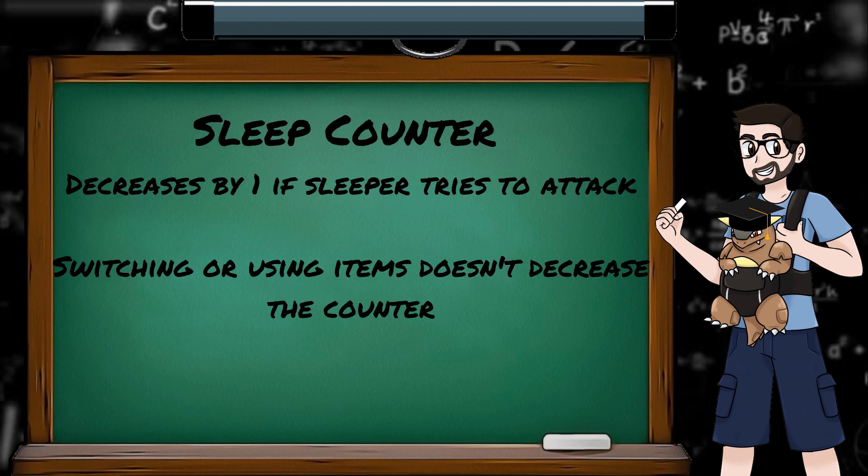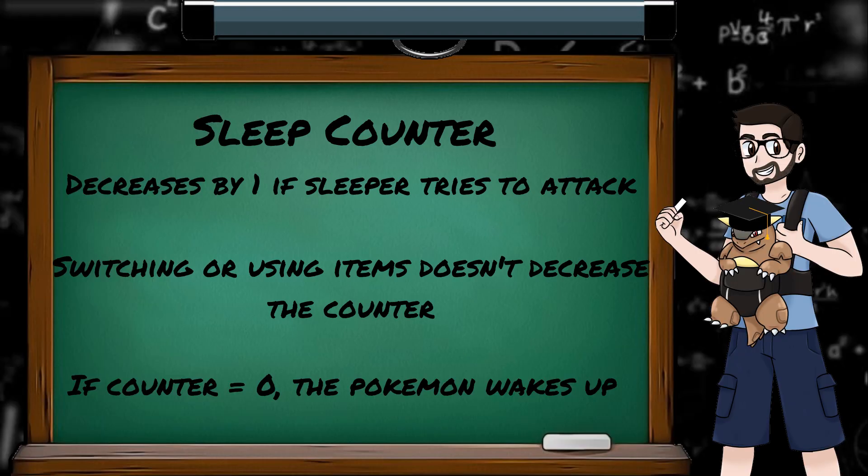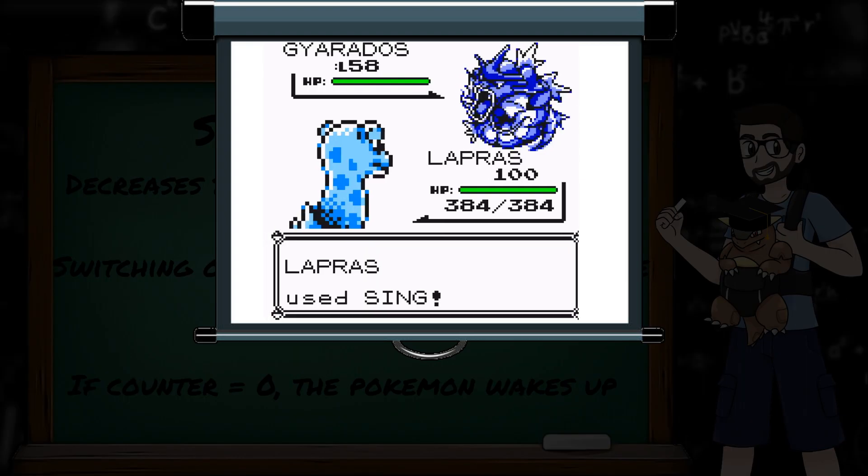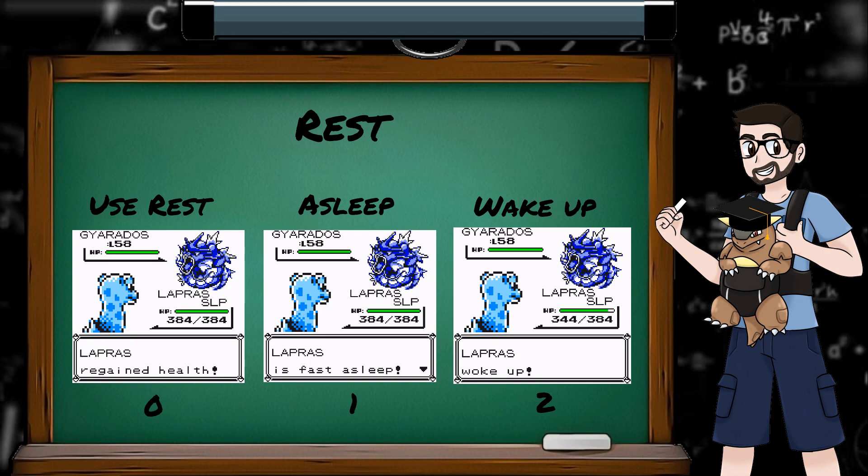The sleep counter only decreases if the sleeping Pokemon attempts to attack. If we switch Pokemon, or use an item like a potion, the sleep counter doesn't decrease. So if your plan is to stall out the enemy with potions as you wait for your sleeping Pokemon to wake up, good luck, you'll be waiting forever. And if the counter is now 0, the Pokemon wakes up. And so on a 1 turn sleep, we land the sleep move, the enemy immediately wakes up and misses their go. And as a last note about sleep, we can put ourselves to sleep with the move rest. Although the counter is always set to 2 in that case, so a Pokemon using rest will always wake up on the second turn after using the move.